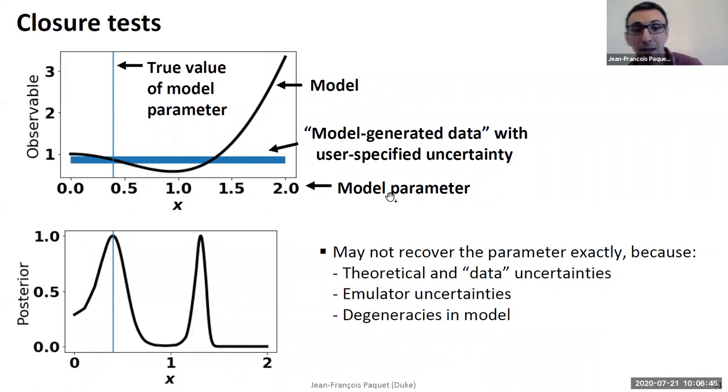And the closure test might look trivial. You might expect that you should recover always exactly the true value. And there's a number of reasons why you don't. It could simply be because, of course, you have uncertainties. If you have uncertainties, it means that you have some uncertainty on your parameters.